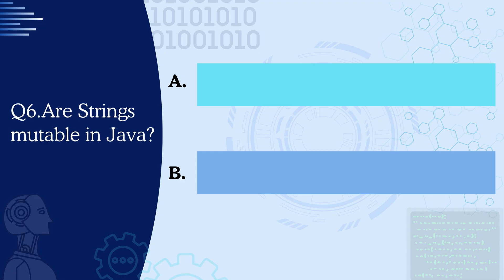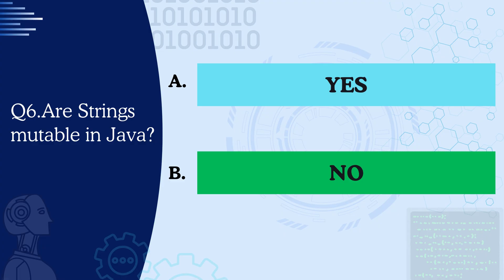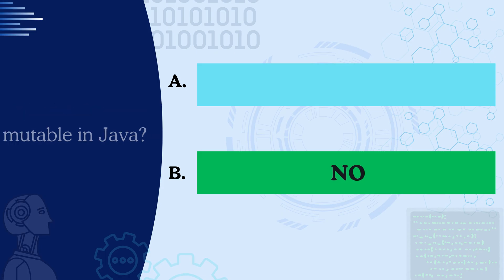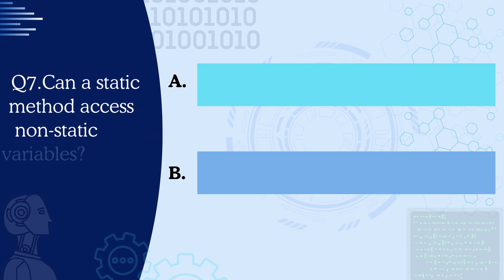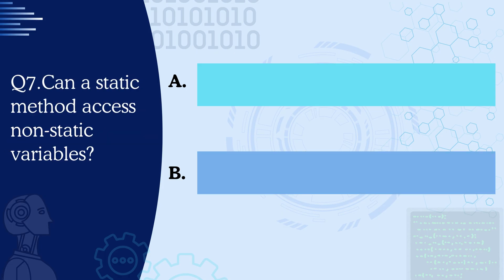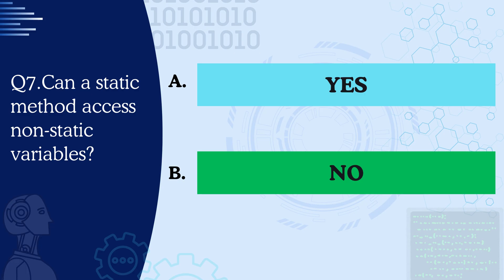Question 6: Are strings mutable in Java? The correct answer is no — they are not. They are immutable in nature; once created, their value can't be changed. Question 7: Can a static method access non-static variables? The correct answer is no, it can't.